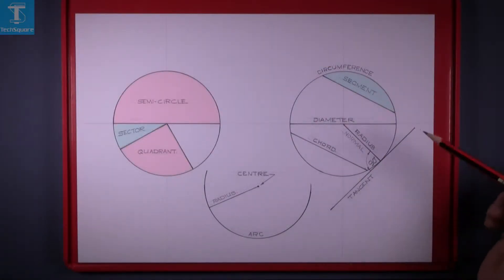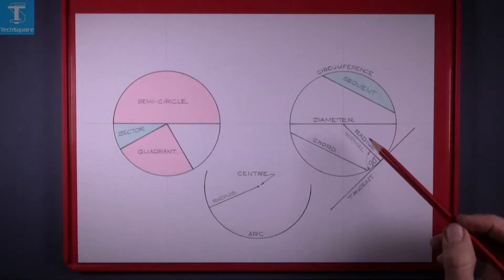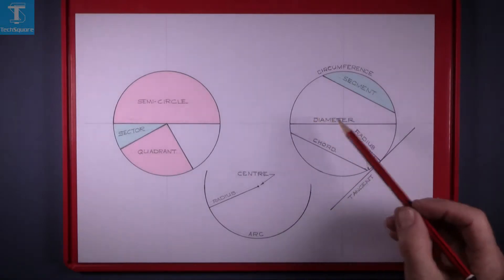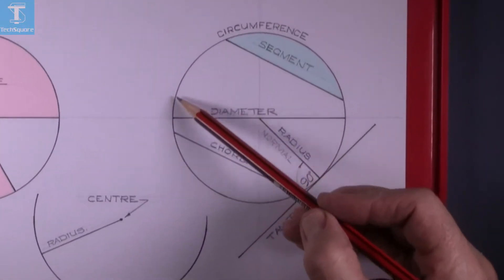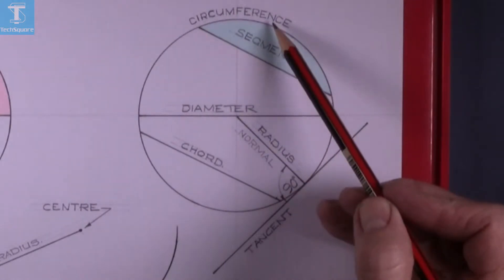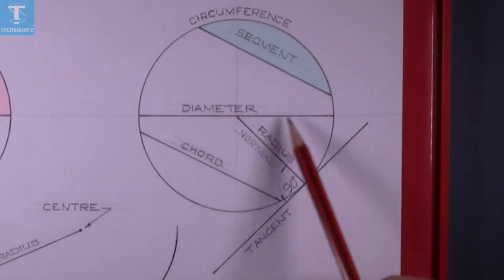This here is our next exercise, the parts of a circle. What we have here is the circle, and the outer core here is called the circumference. A line that goes through the center is called a diameter.